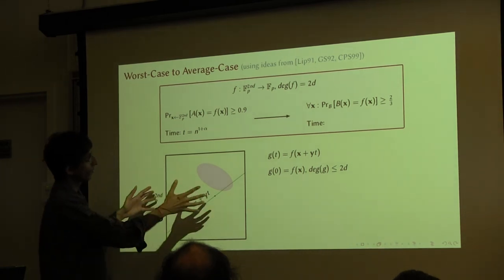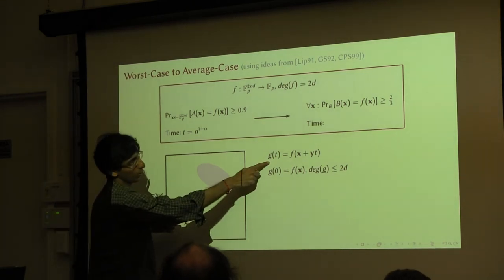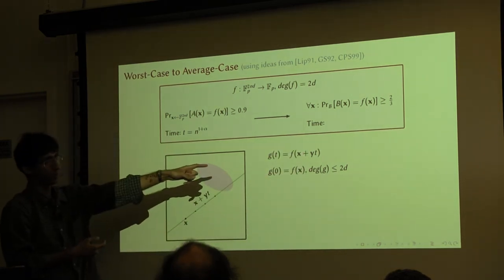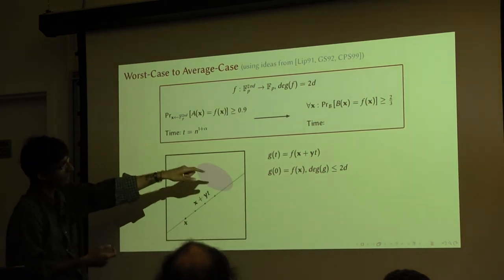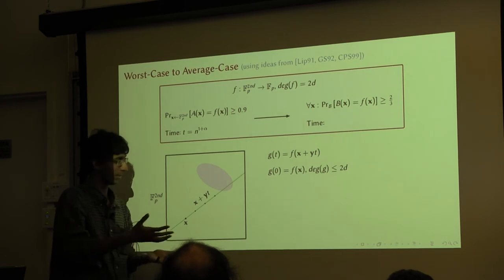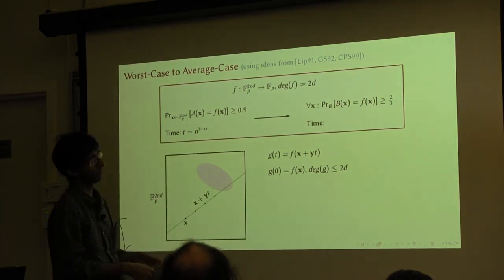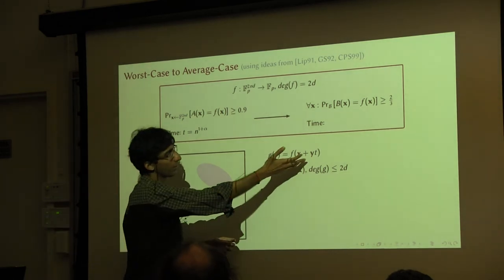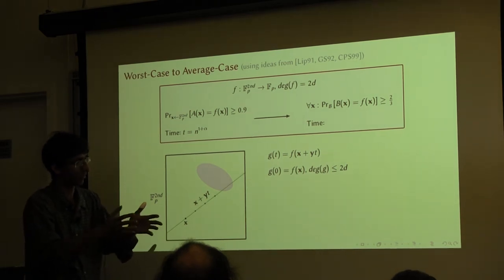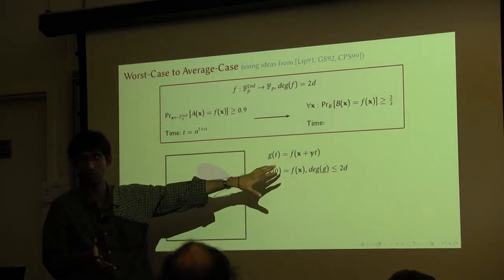Then it looks at the restriction of the polynomial F to this line — the univariate polynomial G of t, which is: you take x plus Y times t and evaluate F at that point. This is a univariate polynomial with two properties: if you evaluate it at zero, you get the answer you want. And its degree is the same as that of F — it's 2D. Because considering every monomial in F and replacing it with x plus Y times t, you get that the degree of this univariate polynomial is the same as the degree of F.